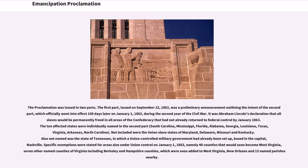The ten affected states named were: South Carolina, Mississippi, Florida, Alabama, Georgia, Louisiana, Texas, Virginia, Arkansas, and North Carolina. Not included were the Union slave states of Maryland, Delaware, Missouri, and Kentucky. Also not named was the state of Tennessee, in which a Union-controlled military government had already been set up based in the capital, Nashville.